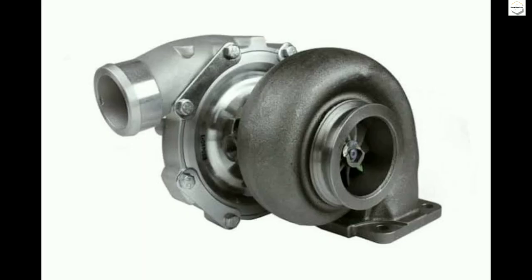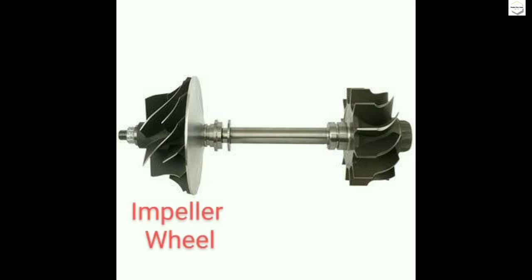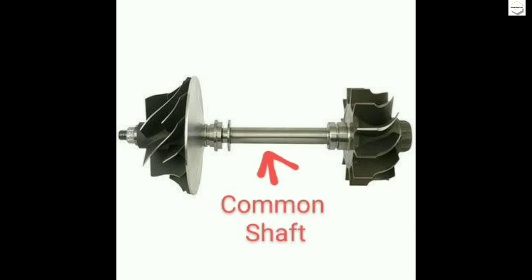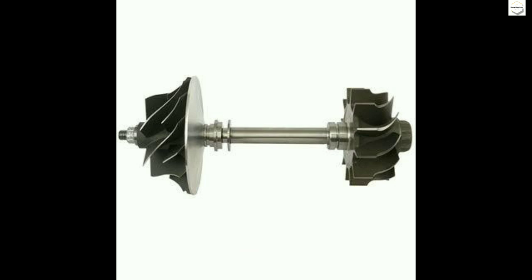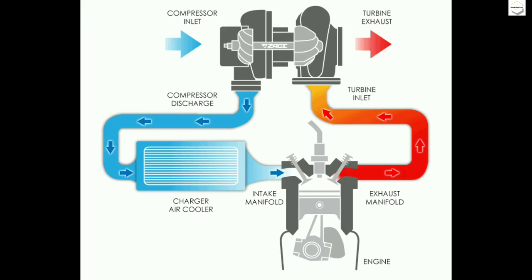Now we will see how the turbocharger works. The turbocharger has three main structural components: a turbine structure, an impeller structure, and a common shaft connecting them. How does the turbocharger work with the turbine? When exhaust gases flow through the turbocharger, they spin the turbine wheel.